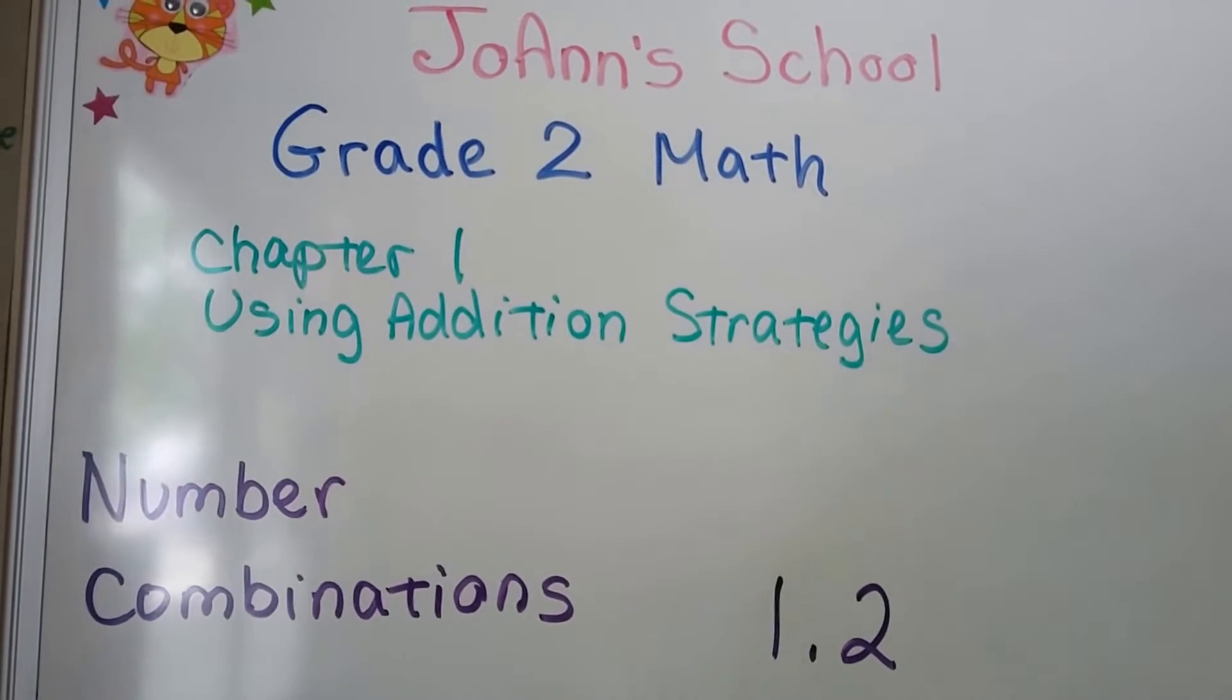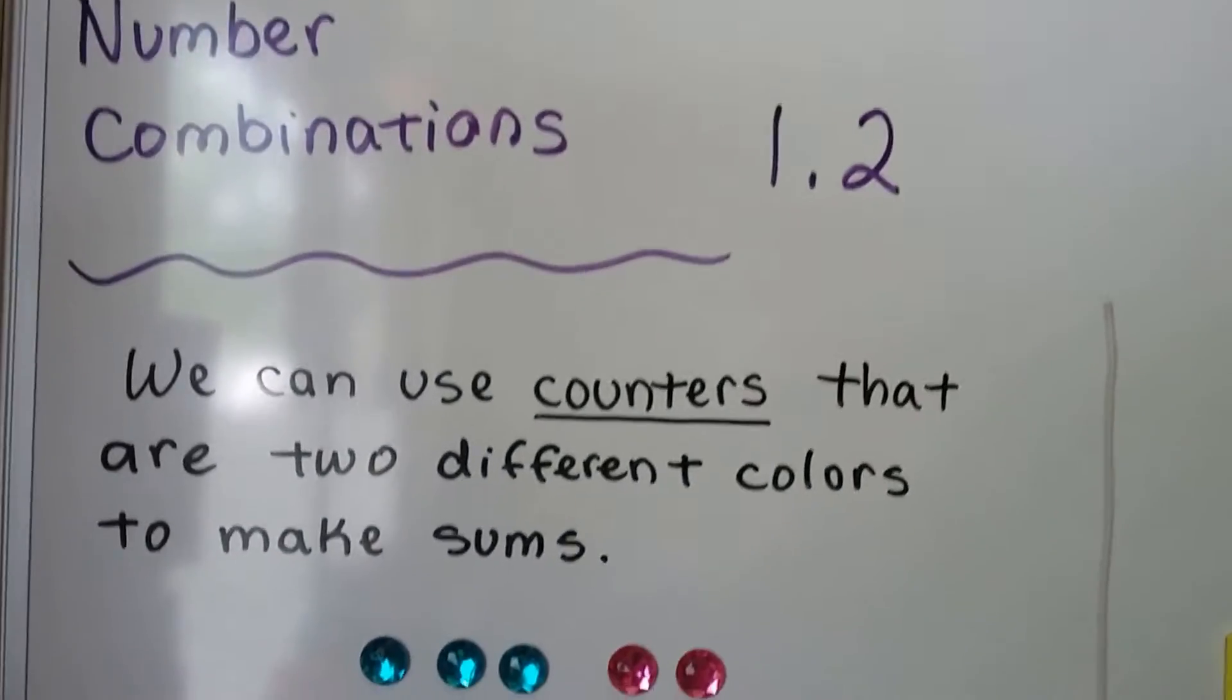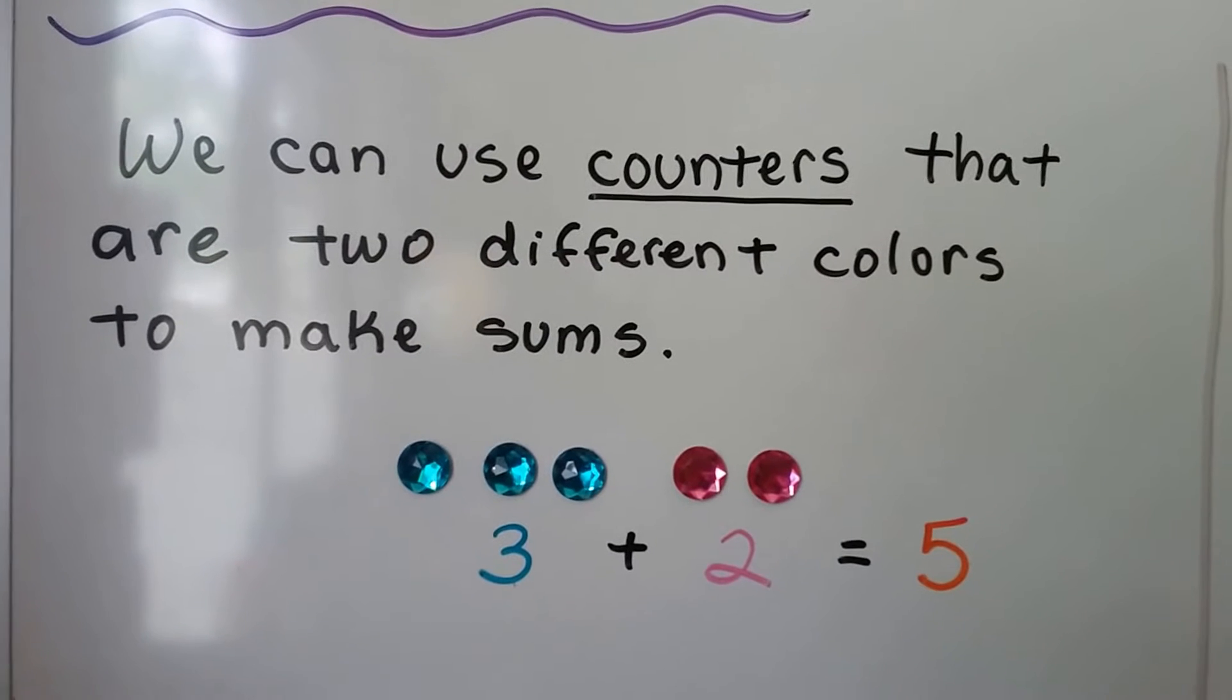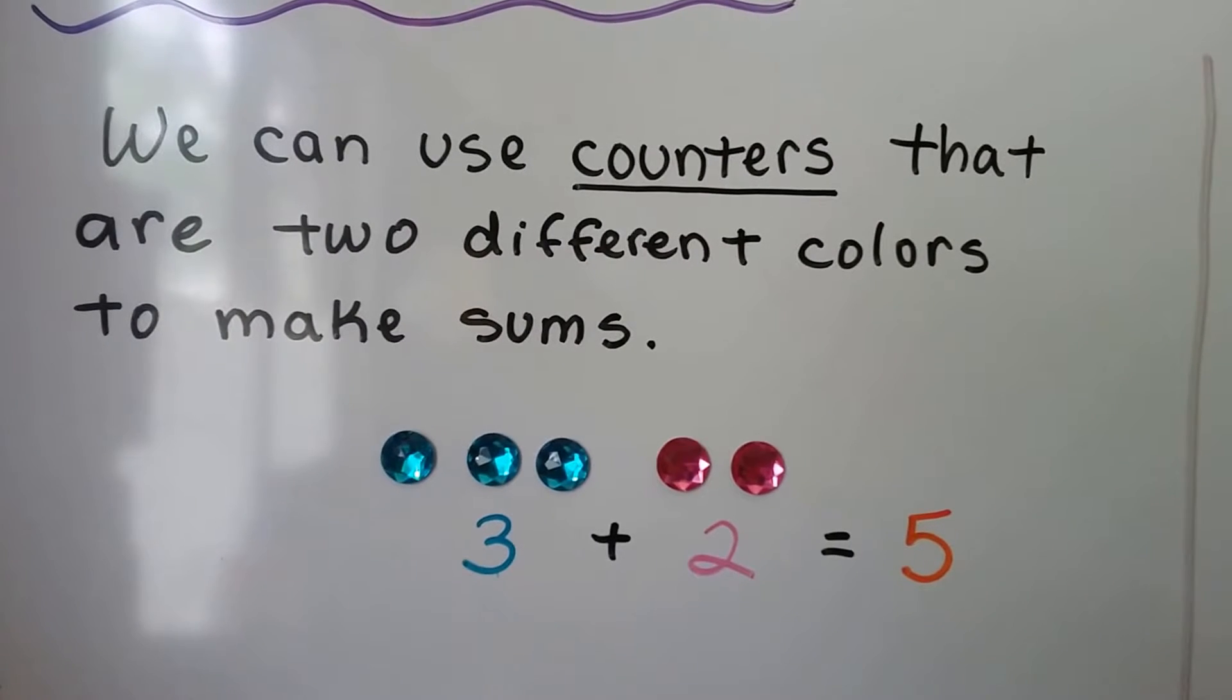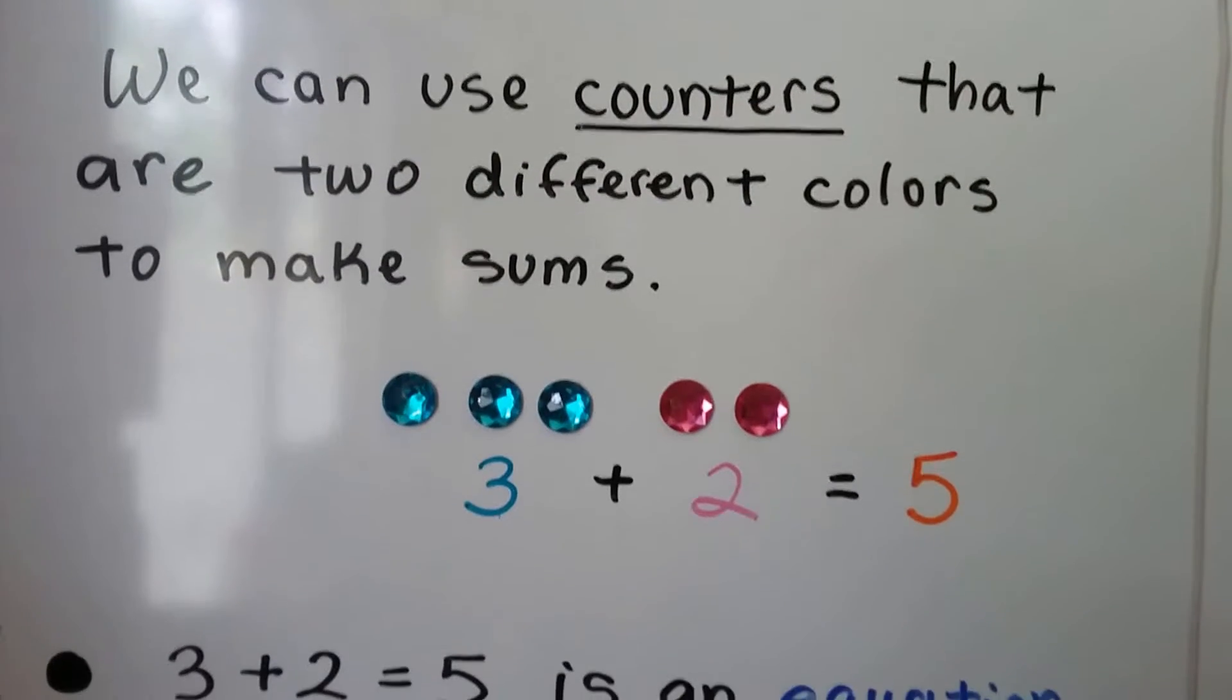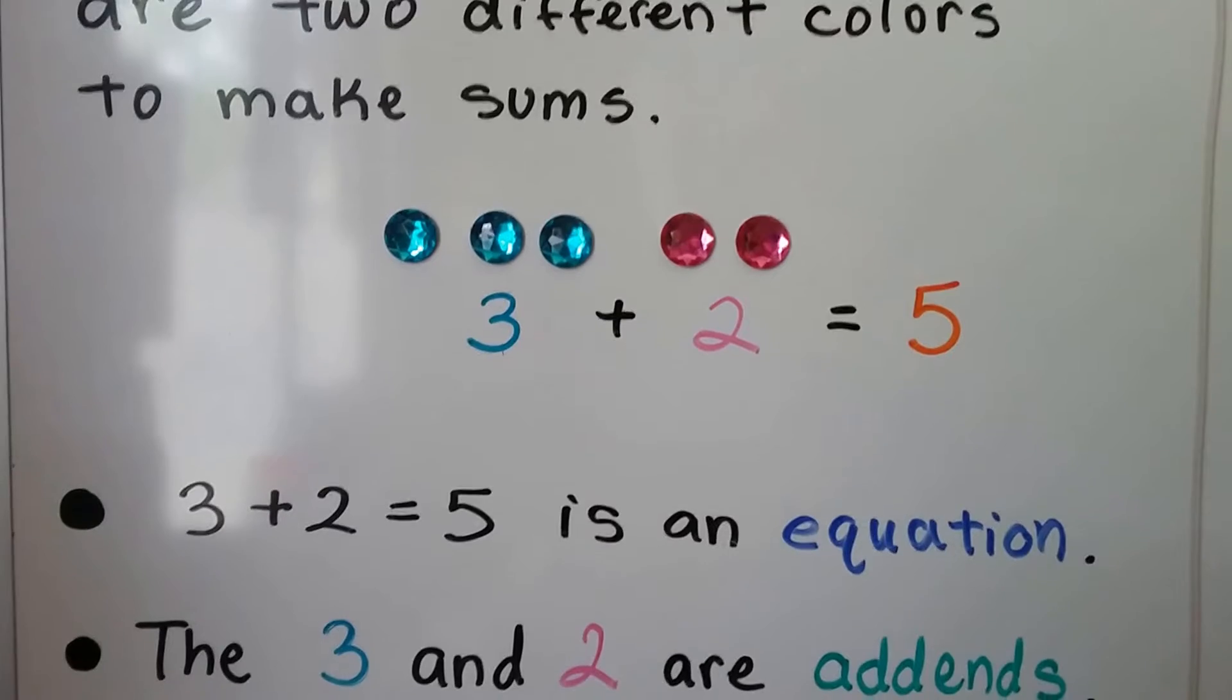Number combinations, lesson 1.2. We can use counters that are two different colors to make sums. We have three blue gems and two pink gems. That's three plus two. That's five gems.